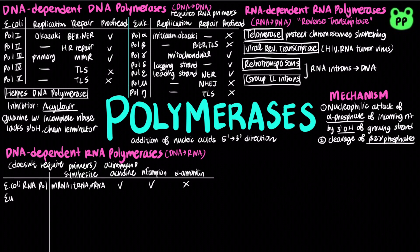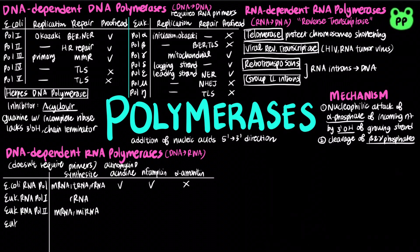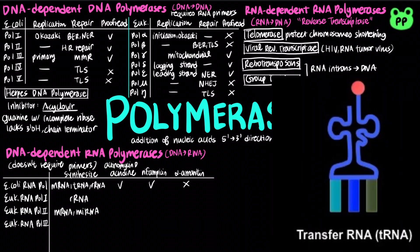Eukaryotes have three types of RNA polymerases. RNA polymerase 1 synthesizes rRNA. RNA polymerase 2 synthesizes mRNA and microRNA or miRNA that functions in RNA interference. And RNA polymerase 3 synthesizes tRNA and 5S rRNA.